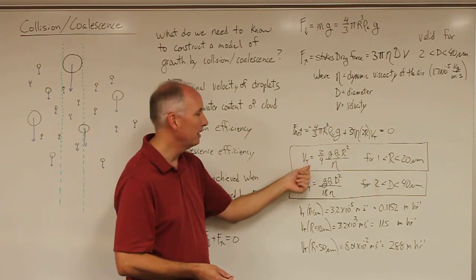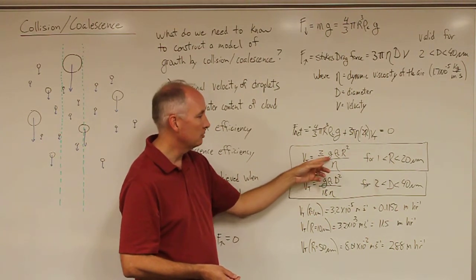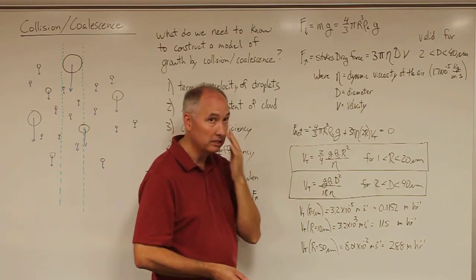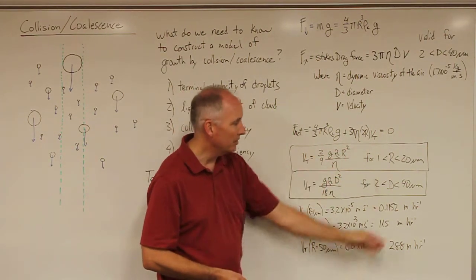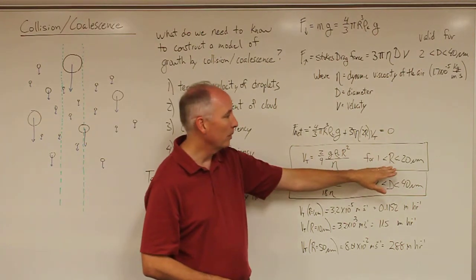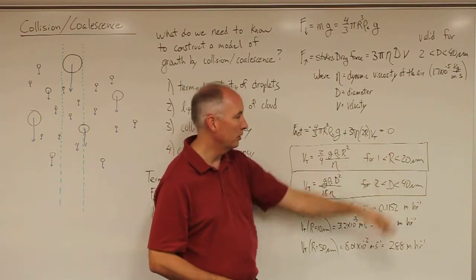You can do the algebra, and you get that the terminal fall speed is equal to 2/9 times gravity times the density of liquid water times r² over η. This is strictly valid for radii between 1 and 20 micrometers.